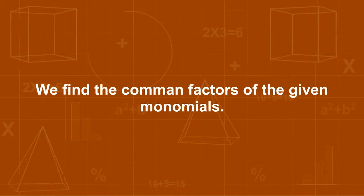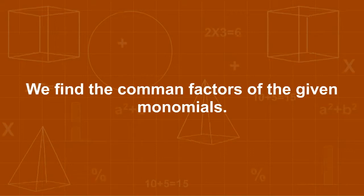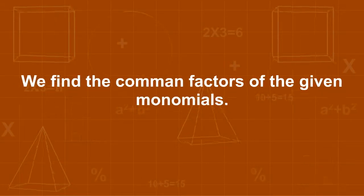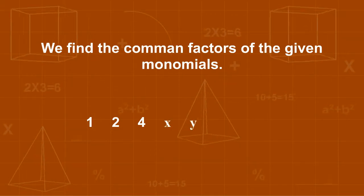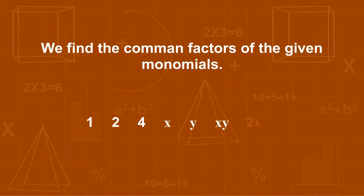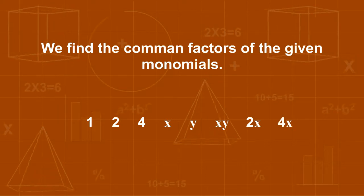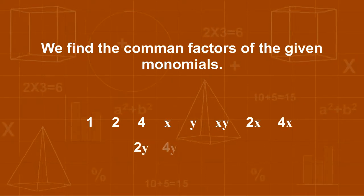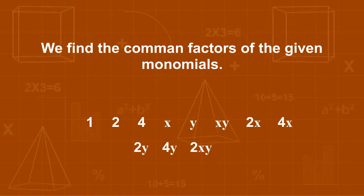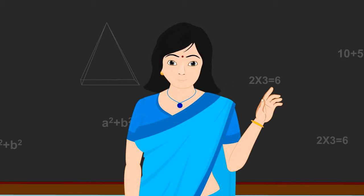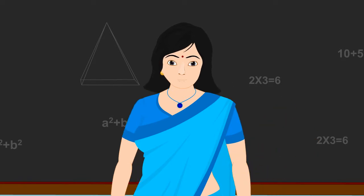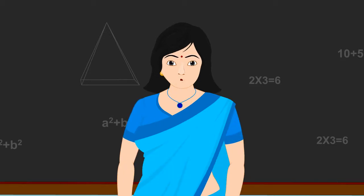So if we find the common factors of the given monomials, these would be: 1, 2, 4, x, y, 2x, 4x, 2y, 4y, 2xy, and 4xy. In this way we can find the common factor of different monomials.